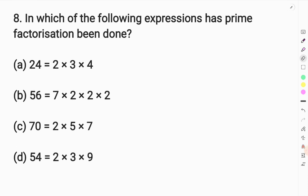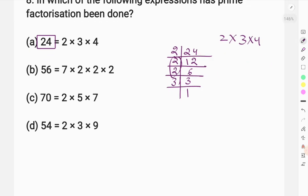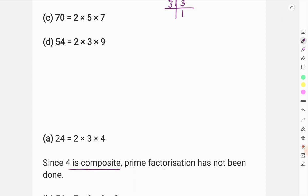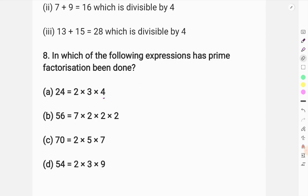Question 8 asks: in which of the following expressions has prime factorization been done correctly? Let's see — for 24, if we do prime factorization, we will have 2 times 2 is 4, 2 times 6 is 12, 2 times 3 is 6, and 3 times 1 is 3. So the result should include 2, 3, and 4. But 4 is a composite number, so prime factorization has not been done correctly. If we replace 4 with 2 times 2, then prime factorization is complete.